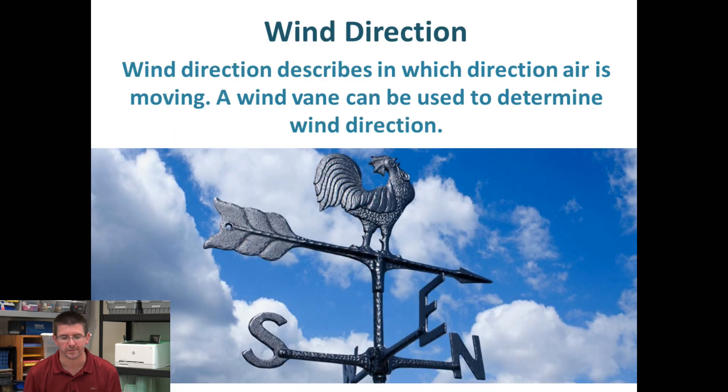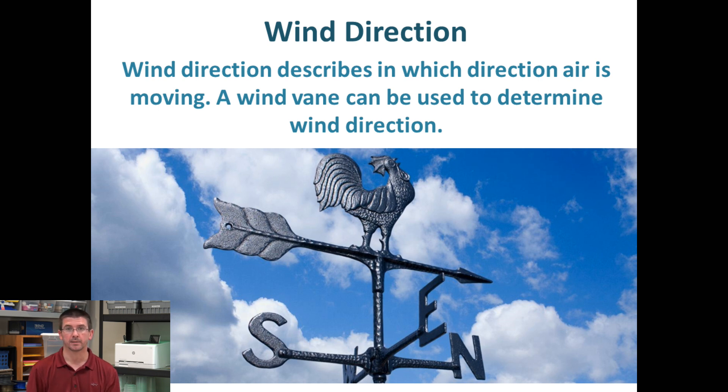Wind direction is the last important factor we can study when we study weather. Wind direction lets us know where the wind is coming from and which way it's blowing, so we can look at other areas to see if their weather is moving towards us and what we might expect. Over the next few lessons we'll be looking at how we use these factors to describe the weather and make predictions about what the weather might be in days and months to come. This is just our introduction to some of the tools and characteristics of weather that will be important in this unit.